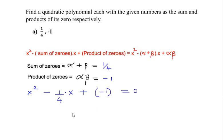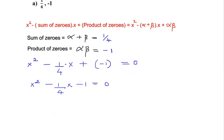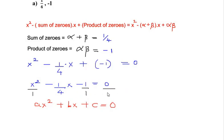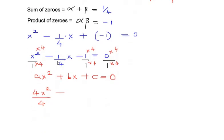So let us write it equal to 0: x² - (1/4)x - 1 = 0. Now let us get it into standard form ax² + bx + c by getting rid of the fraction. We take the LCM, writing x² over 1, and since the denominator is 4, we multiply through by 4.